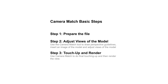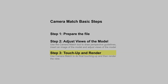To use the Camera Match tool, we go through three basic procedures, each with subtasks. The first step is to prepare the file. The second is to use the Camera Match tool to draw perspective guidelines, insert an image of the model, and then adjust views of the model. The final step is to use Camera Match to do final touching up, and then render the view in RenderWorks or in another rendering method.